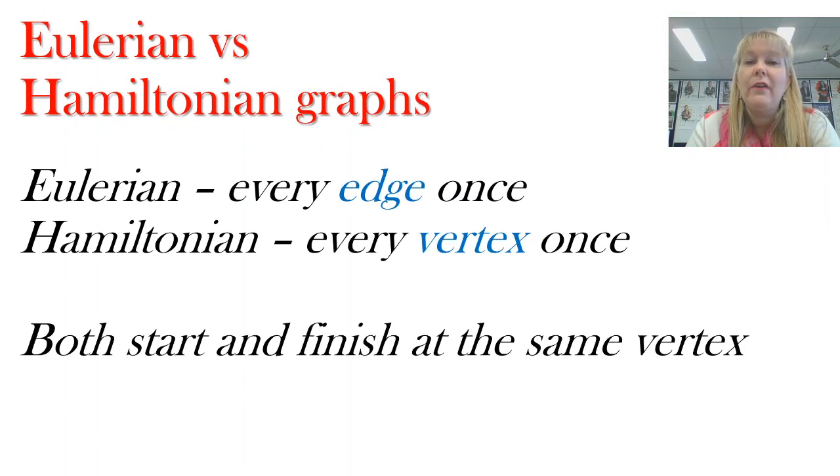Now, the key difference between an Eulerian graph and a Hamiltonian graph: remember that the Eulerian graph was every edge visited once, and here it's every vertex visited once. The one thing they've both got in common is that we're starting and finishing at the same place.